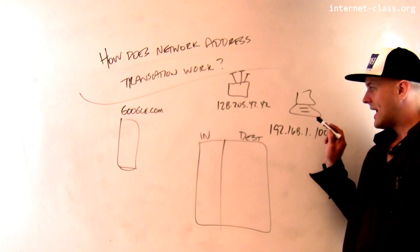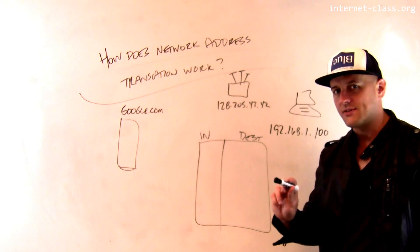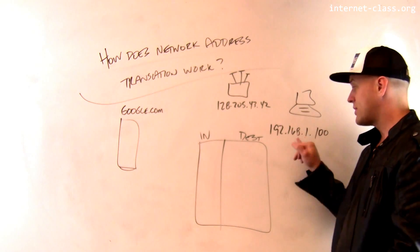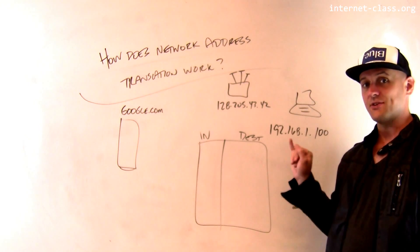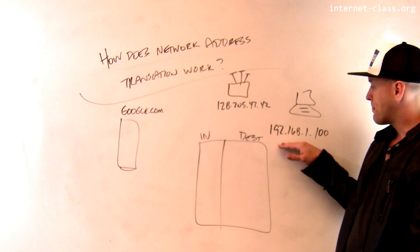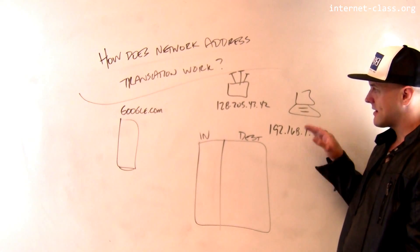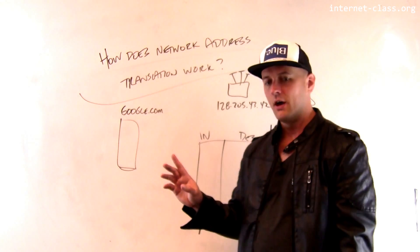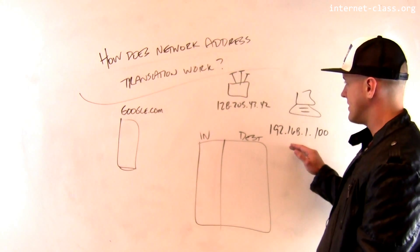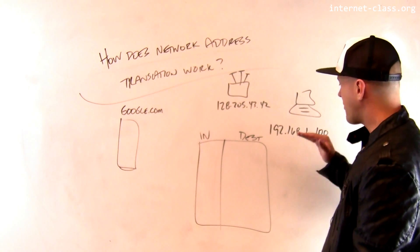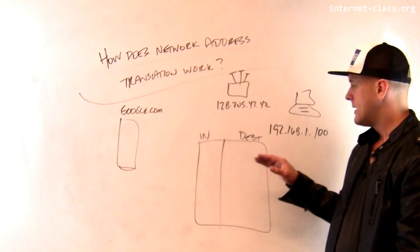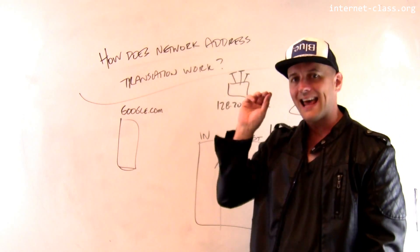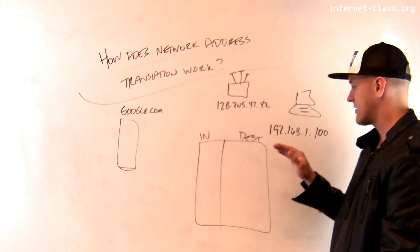The question is, how does a computer with this address — and if you use a home wireless router, your computer probably has an address like this, look it up — how does a computer with an address like this actually initiate a connection to the rest of the Internet? In order for network address translation to work, the translation has to be performed by a computer that has a public IP address.